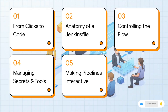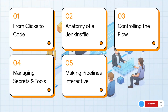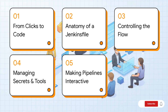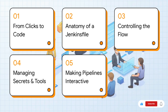Here's how we're going to break it down: we'll start with the big 'why' — why you'd even want to move to pipeline as code. Then we'll dissect a Jenkinsfile piece by piece. After that we'll level up and add some logic, figure out how to handle secrets, and finally make our pipelines interactive.